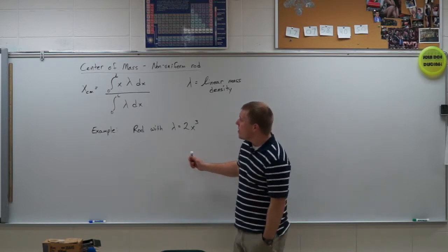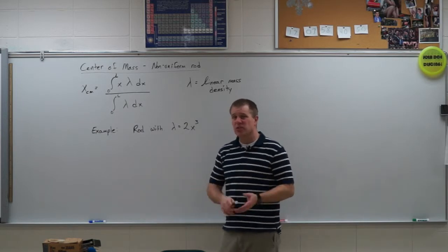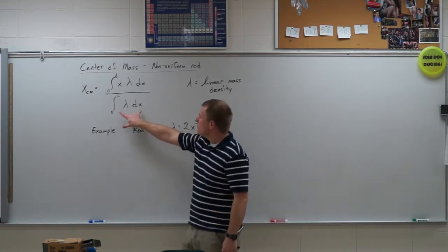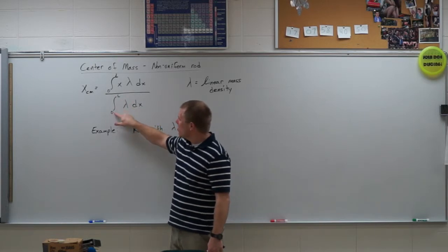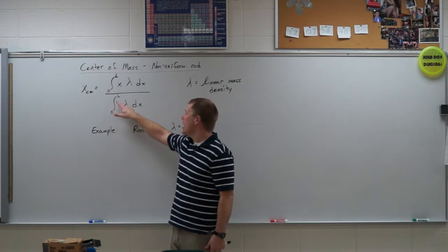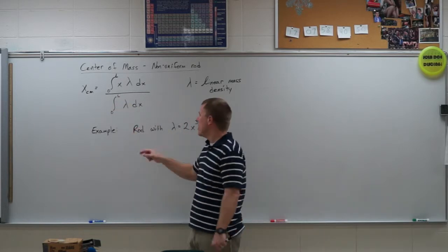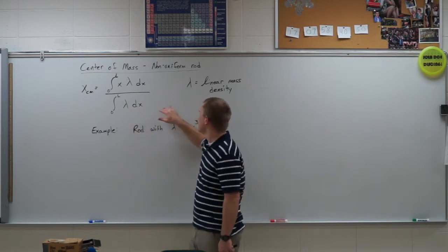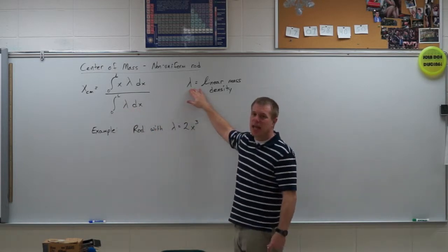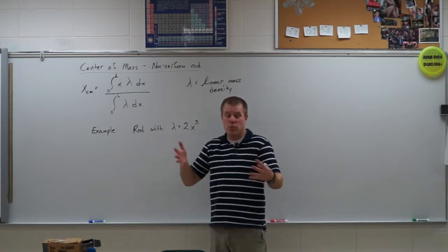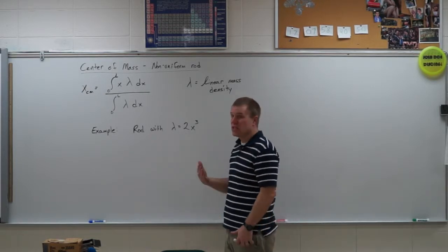So, our equation for the center of mass is similar to our point mass one, but kind of a little different. So on the bottom, I have the integral from 0 to L, where 0 is the start of my rod, L is the length of the rod, times the linear mass density, dx. Now, linear mass density, we give the symbol lambda to. This tells me basically how dense is, how does the density of the rod change with its length or its position.